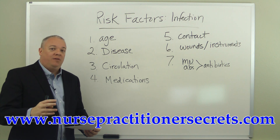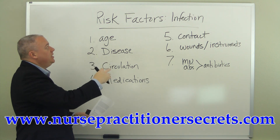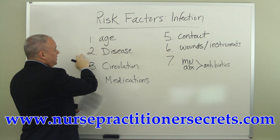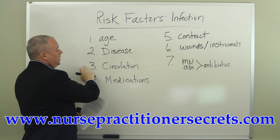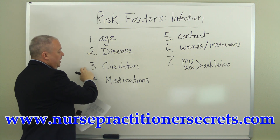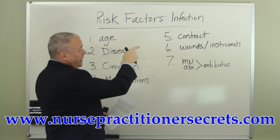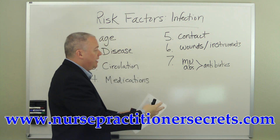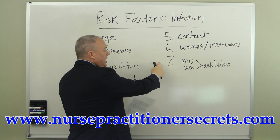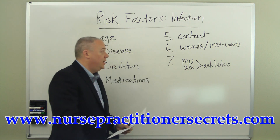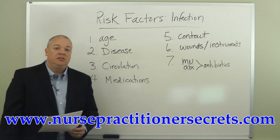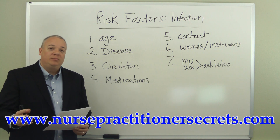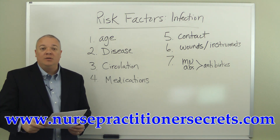These are seven of the risk factors — by no means all of them, but things to keep in mind: young or old, certain diseases that suppress the immune system, inhibited circulation, certain medications, direct contact with microorganisms, wounds and instruments that introduce microorganisms into the host, or the absence or misuse of prophylactic antibiotics for certain surgical procedures. If you'd like to learn more, please click on the link below this video — it'll take you to a website where you can find an ebook ready for immediate download.